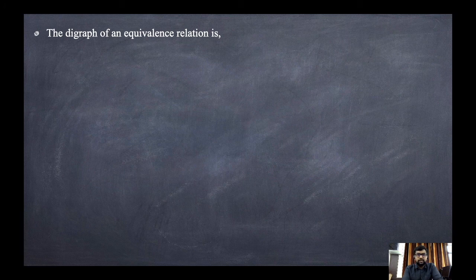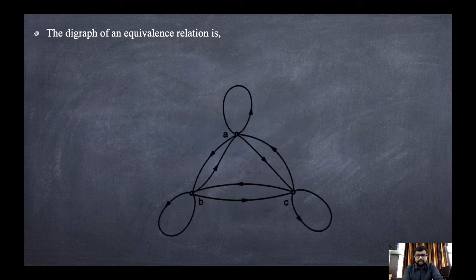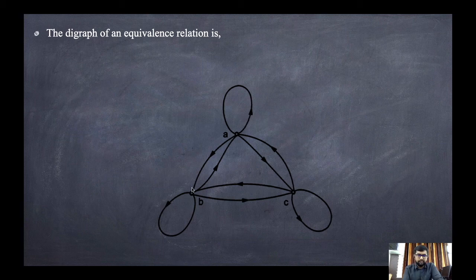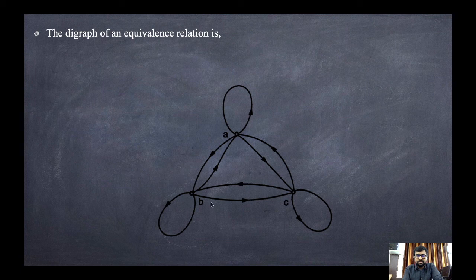The diagram of an equivalence relation looks like this: we have three points A, B, C. The loops indicate reflexivity — B is related to B, A is related to A, C is related to C. For symmetry, if A is related to B then B is related to A. Transitivity then applies: if A is related to B and B is related to C, then A is related to C. We check all six possibilities in this manner.